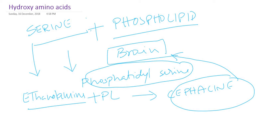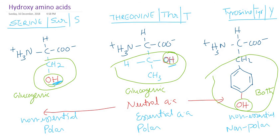So serine, threonine, and tyrosine — these three are hydroxy amino acids. Thanks for watching.